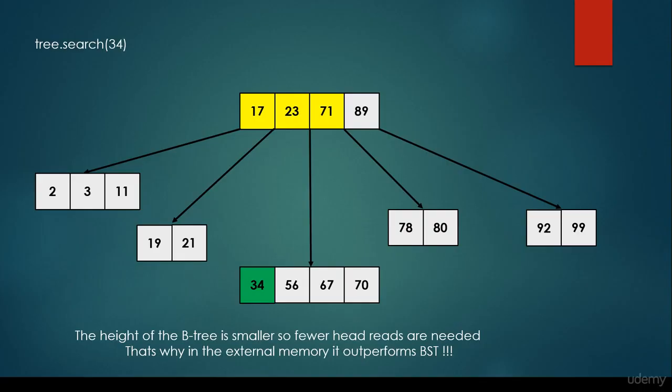We are able to solve it with the help of B-trees. We can store more keys in a single node, and every node can have several children, so the height of the tree is going to be smaller. We have to use head reads fewer times, and that's why our algorithm is going to be faster. Thanks for watching!